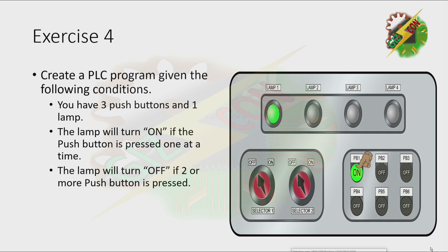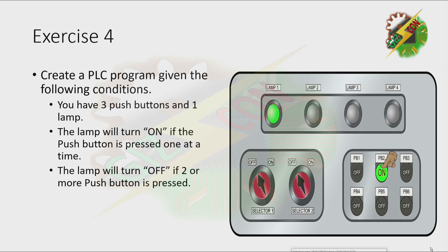Let's press PB1 — lamp 1 turns on. PB2 — lamp 1 turns on. PB3 — lamp 1 turns on. Now pressing PB1 and PB2 together — lamp turns off. Pressing PB2 and PB3 together — lamp turns off. Pressing PB1 and PB3 together — lamp turns off. As you can see, only one push button must be pressed to turn on the lamp.